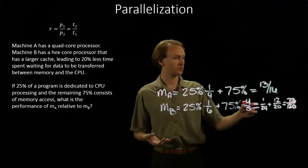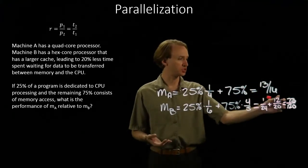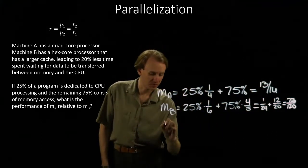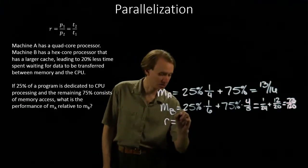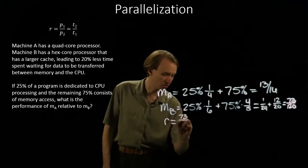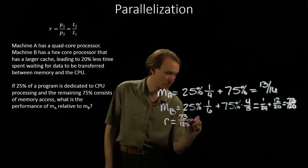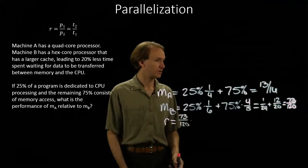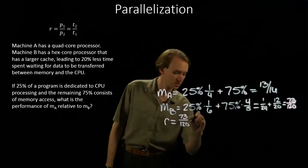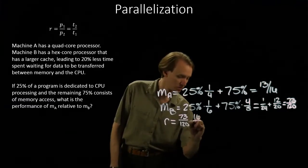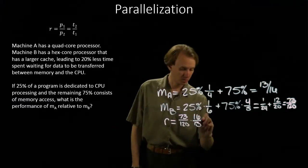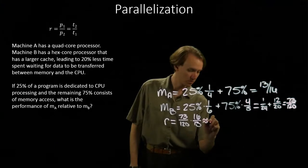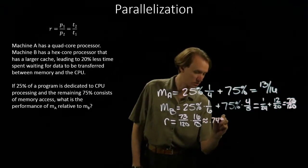So machine B requires seventy-three one-twentieths as much time as that serial machine that we are not interested in. Since we're interested in the performance of machine A relative to machine B, I would set up the relative performance ratio as seventy-three over one-twenty divided by thirteen-sixteenths, which is about .7481.